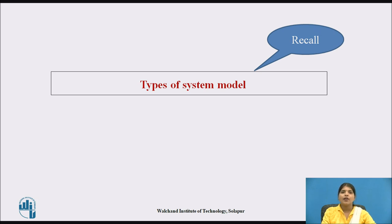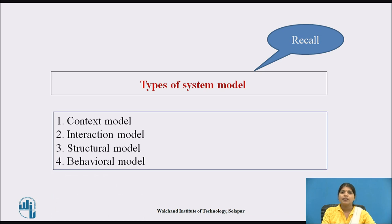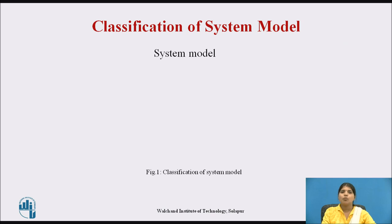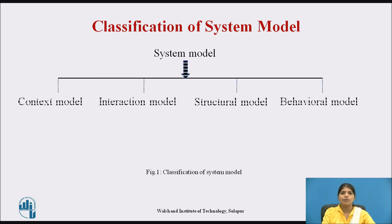There are four types of system model. First, context model; then interaction model; then structural model; and last is the behavioral model. Now we will see the classification of system model in detail. System model is divided into four types, and these types have their subtypes. First, context model — it shows how the system being modeled is placed in an environment with other systems. It has no subtypes.